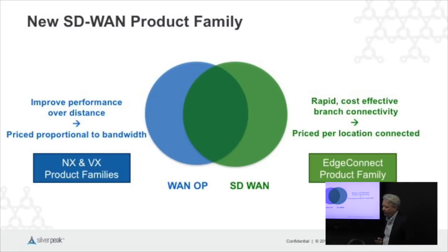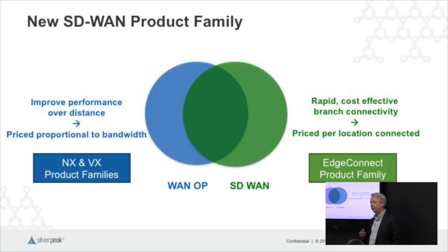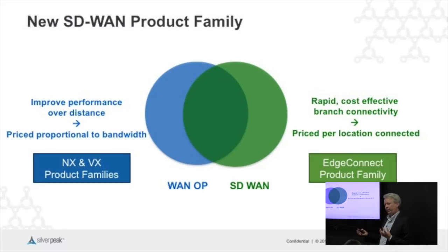SD-WAN, on the other hand, has a primary value proposition about making it easier and simpler to connect branches, and making it easy to leverage different networking technologies — be it MPLS and internet or internet and internet. So they have slightly different emphases in terms of what the core proposition is.